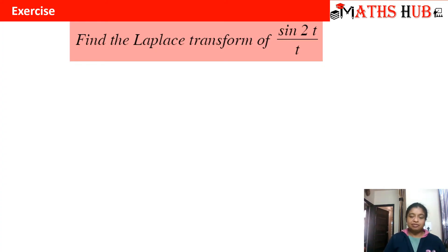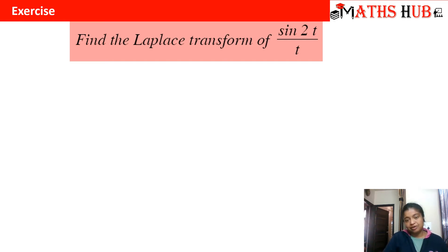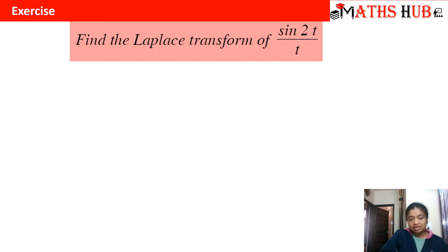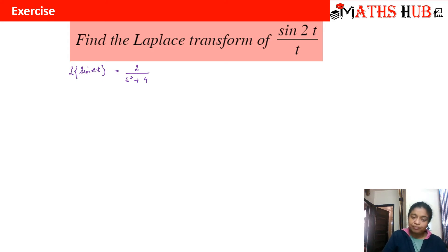We need to find the Laplace transform of sin(2t)/t. To calculate the Laplace of sin(2t)/t, first identify the basic function and then decide which property to apply. Here, sin(2t) is getting divided by t, so we apply the division property. The basic function is sin(2t), and the Laplace of sin(2t) is 2/(s² + 4). This is the first step.